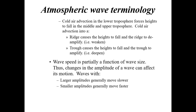Simply put: ridges do not like cold air — it causes ridges to weaken. Upper-level troughs love cold air — cold air advection into a trough causes heights to fall and the trough to get stronger, amplify, or deepen. Now let's discuss wave speed — how fast a wave moves is partially a function of its size. Waves with larger amplitudes generally move slower, whereas waves with smaller amplitudes generally move faster.